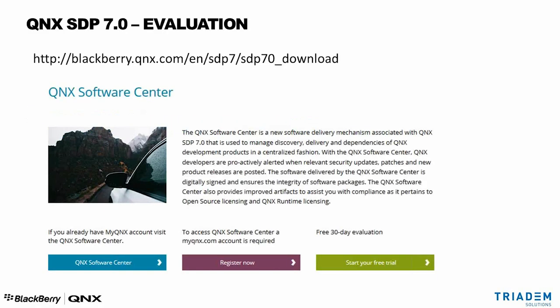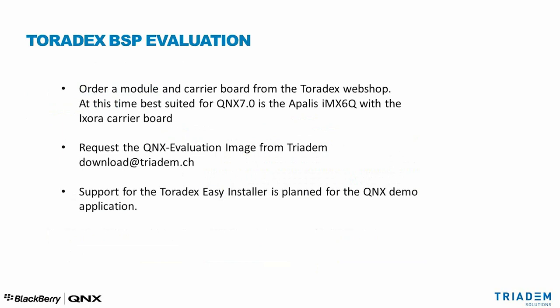So what do you do if you want to evaluate QNX and the BSP for Toradex? At the BlackBerry QNX website, register a myQNX account — best to use a company email address — then simply request an evaluation license. To start the evaluation with the BSP, you'll need a module which you can order on the web; the best suited would be an Apalis i.MX6 with an Ixora carrier board. To get the evaluation image, simply send us an email and we will help you. We technically tested with the Toradex Easy Installer and plan to make images available in the next few weeks.